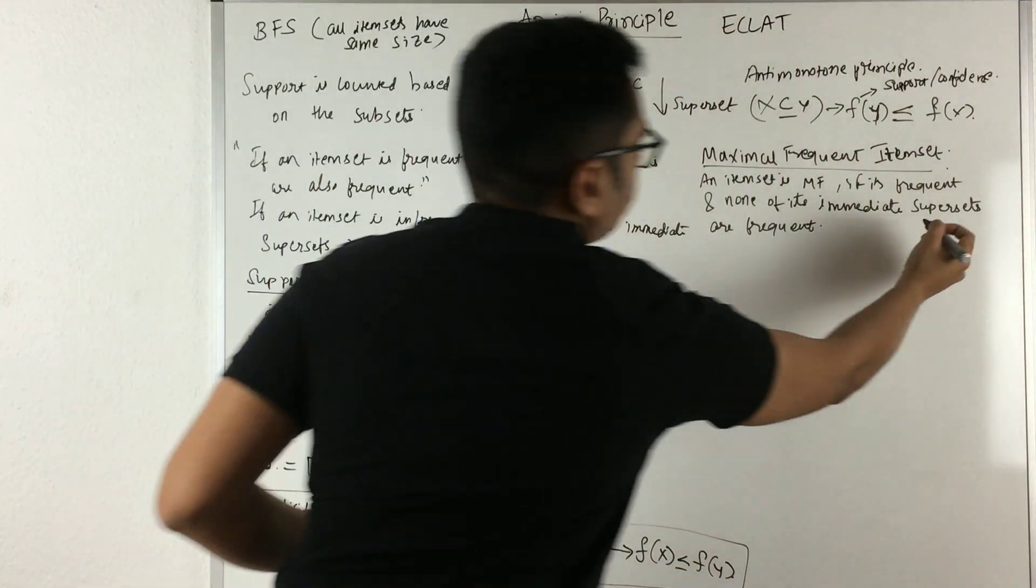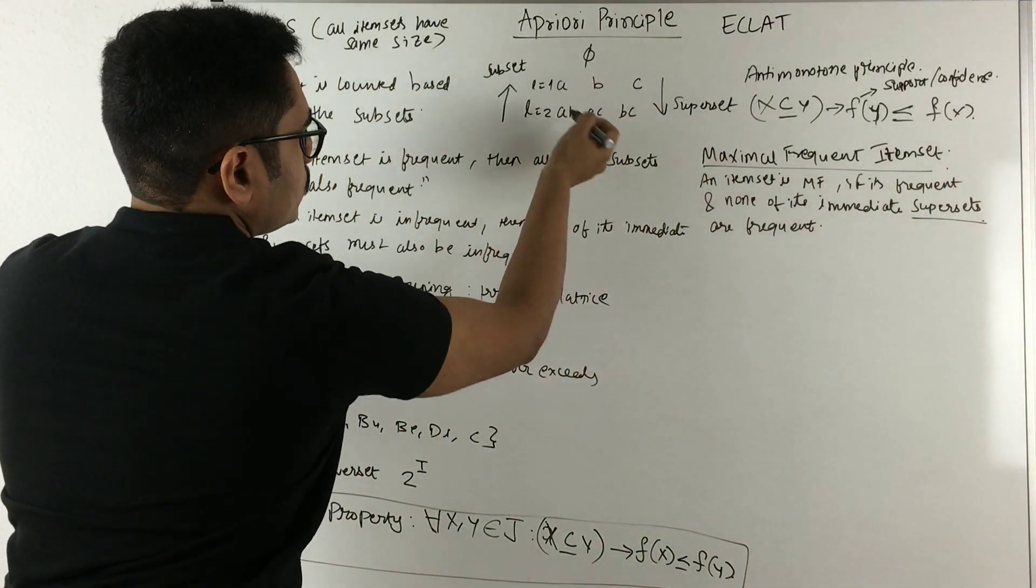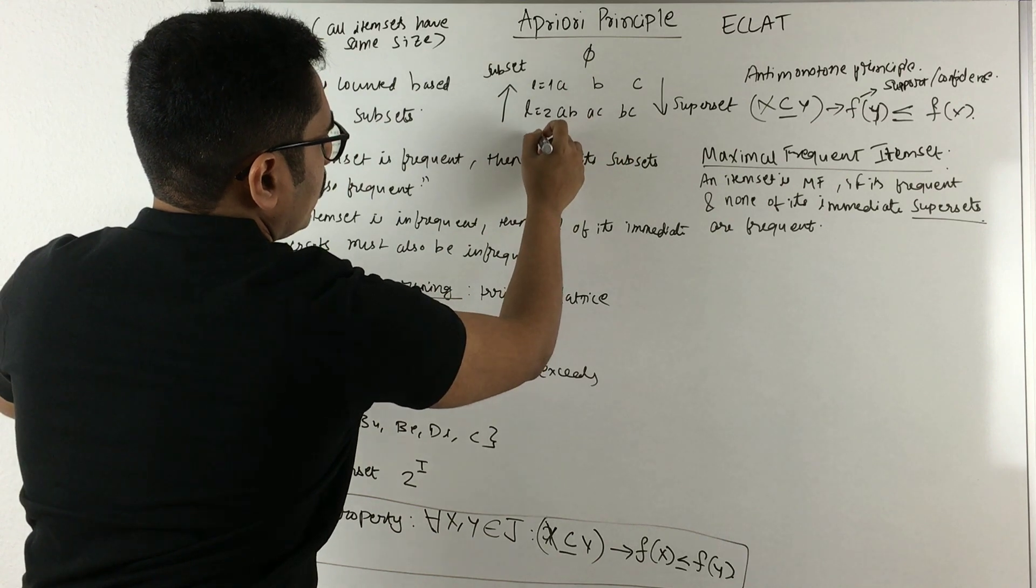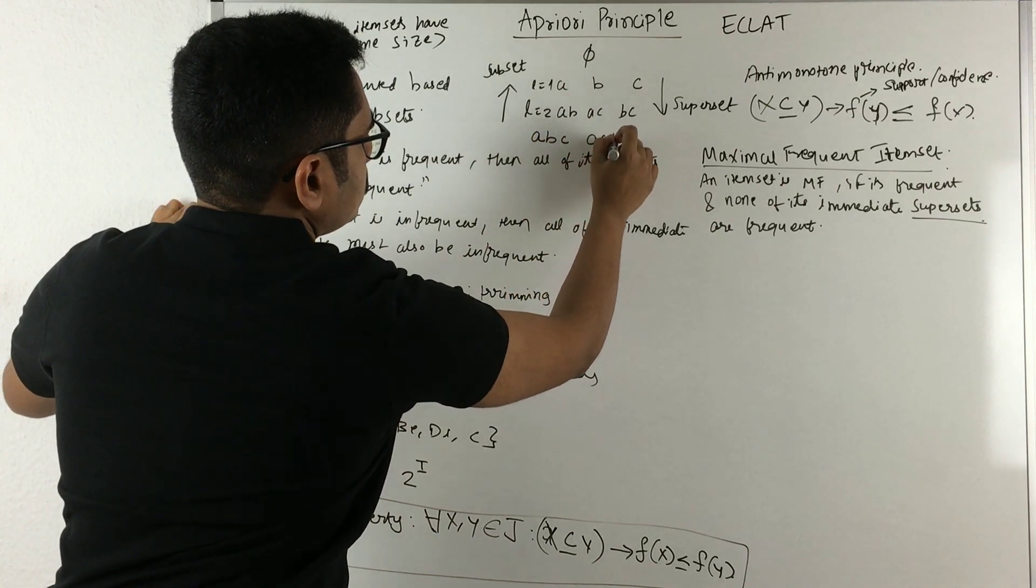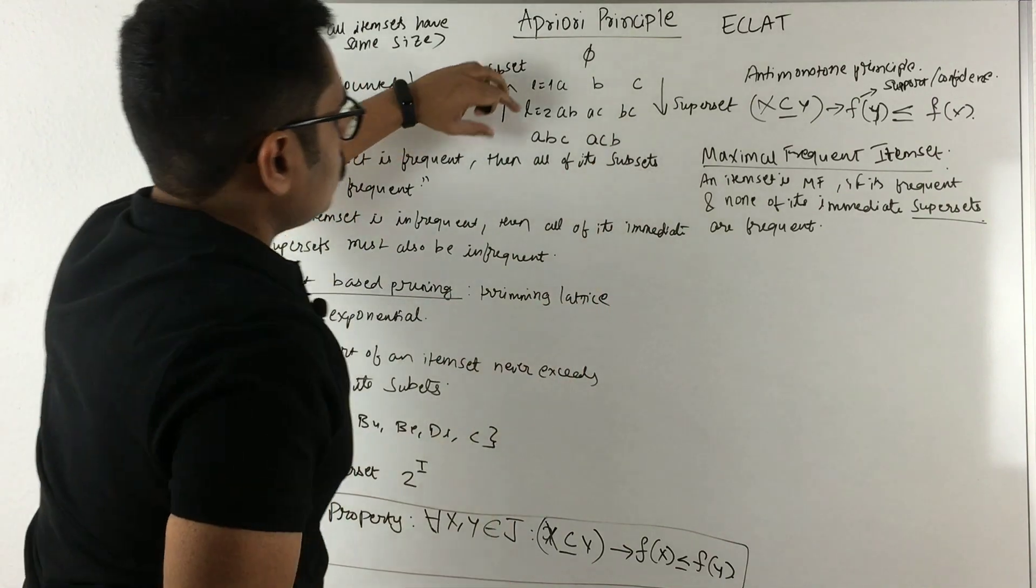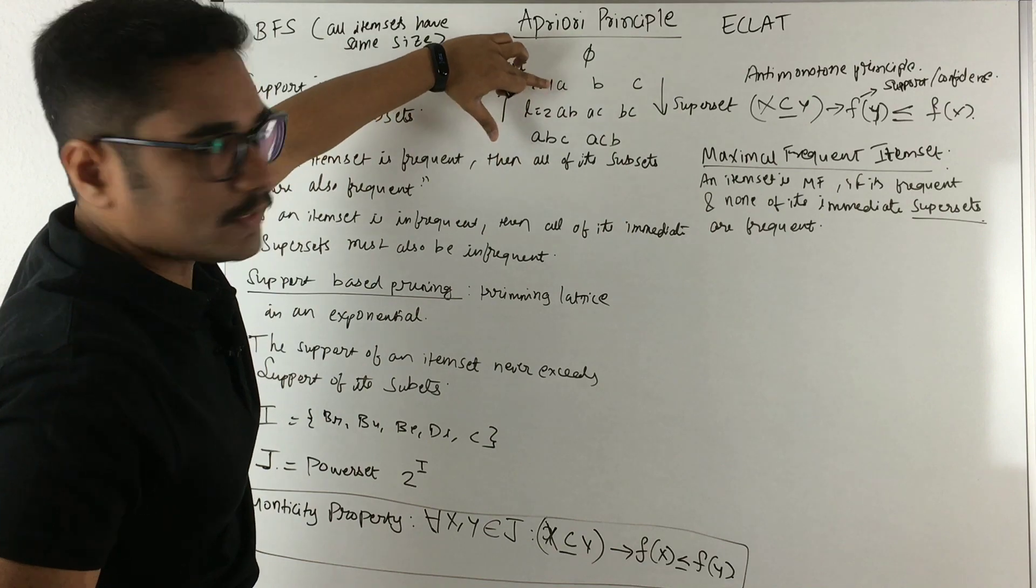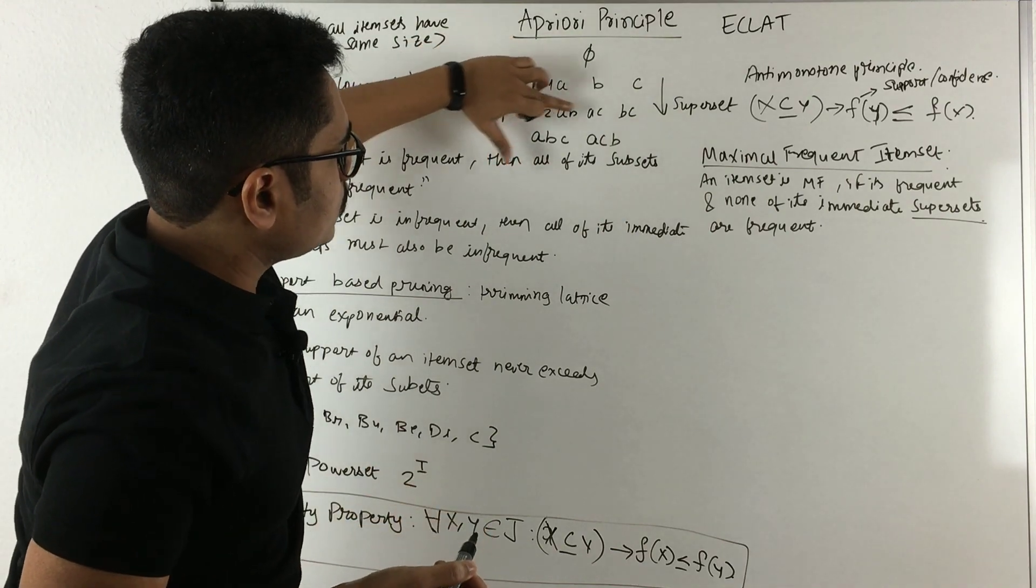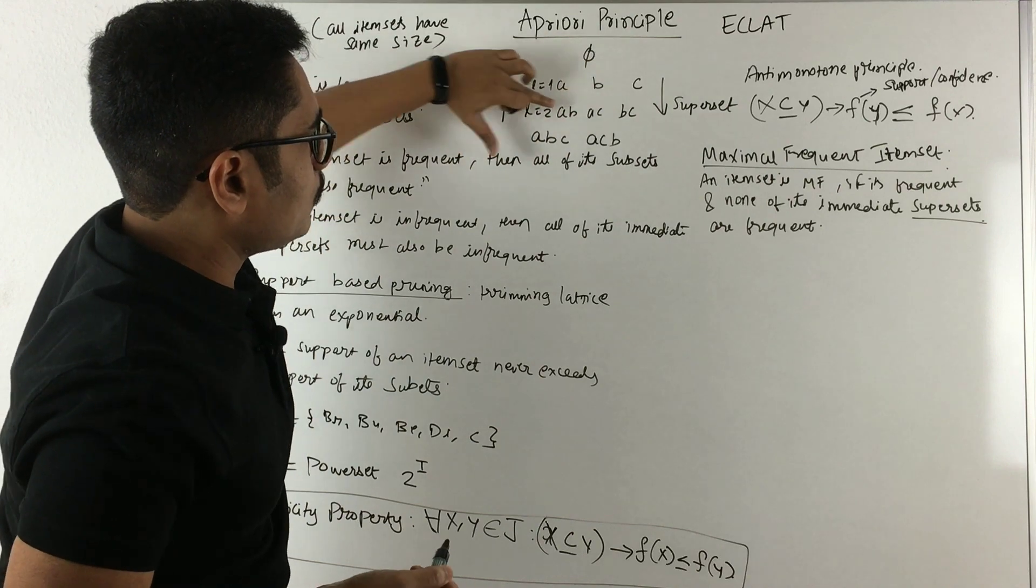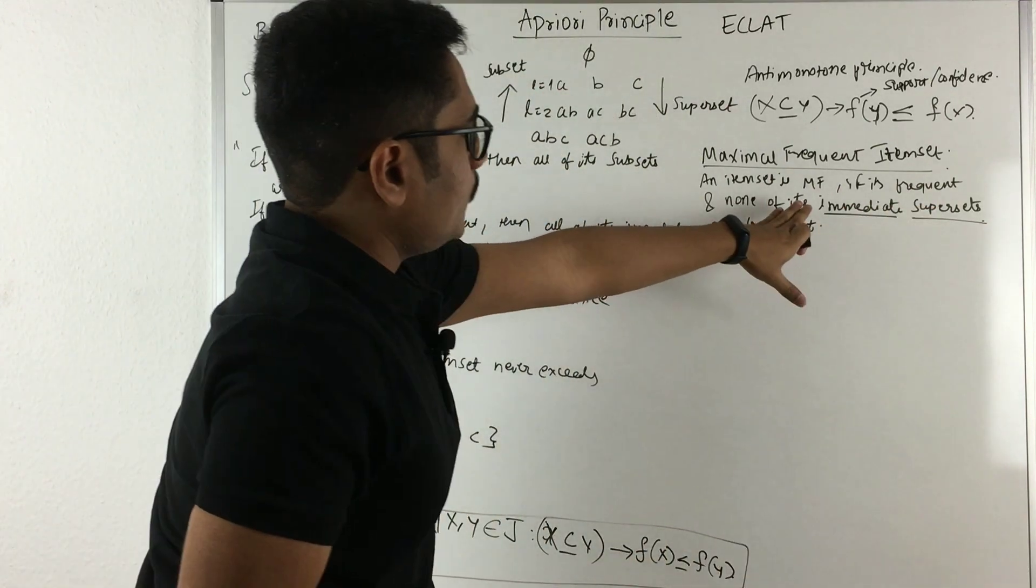So this is the second level. In the third level, what we can have is ABC, then ACB, something like this. So this is also a superset and this is also a superset for this one. But when you talk about immediate superset, that is this one, that is level two. We are talking about level two when it deals with immediate superset. So according to this definition, that is maximal frequent item set, the immediate superset will not be frequent.